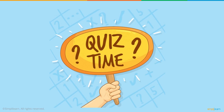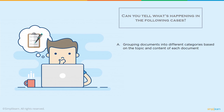Let's take a quick quiz. We'll post the answers in Part 2 of this tutorial. Can you tell what's happening in the following cases? The first one: grouping documents into different categories based on the topic and content of each document — very big these days, whether legal documents, sports group documents, or analyzing newspaper postings.